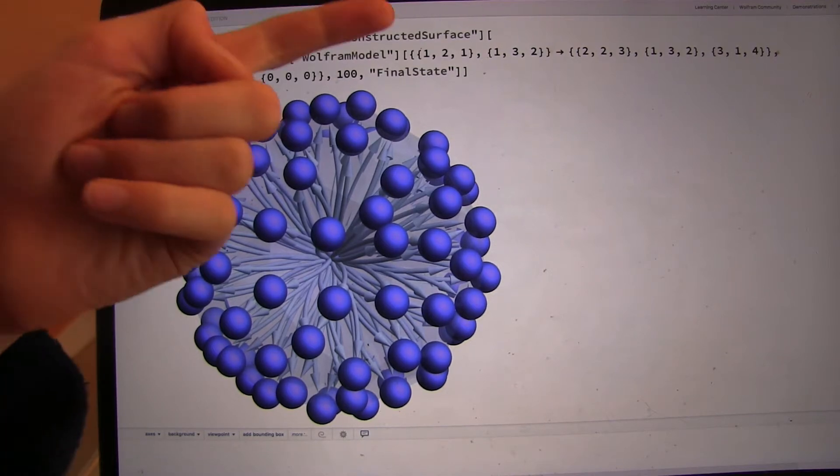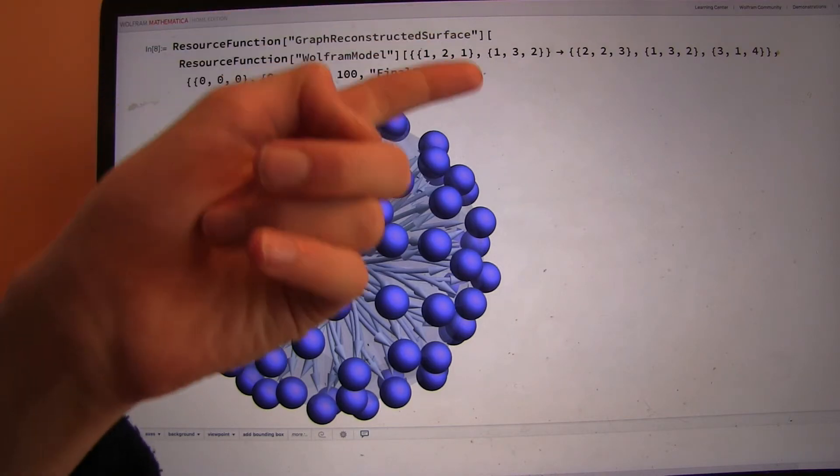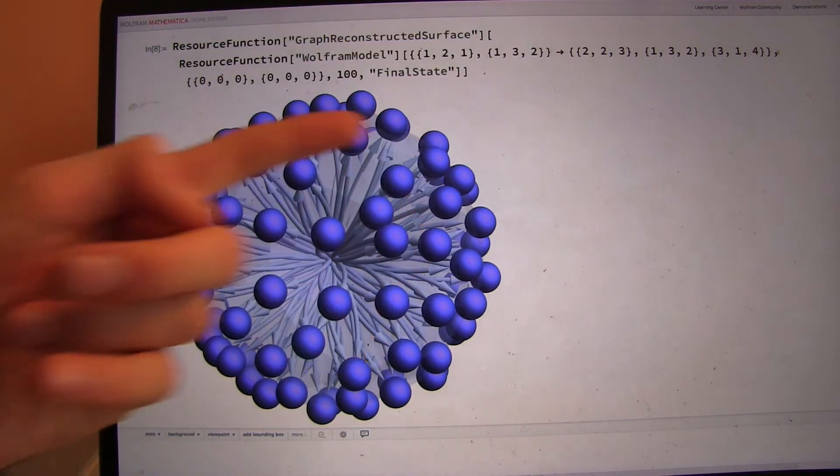So, let's see, we have the sequence 1, 2, 1, 1, 3, 2 goes to 2, 2, 3, 1, 3, 2, 3, 1, 4. Alright.